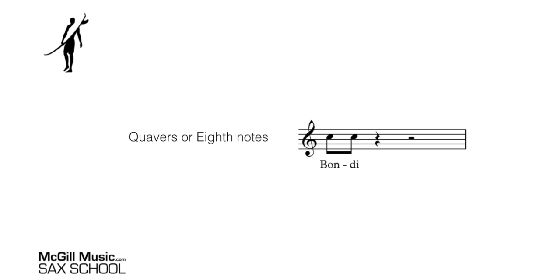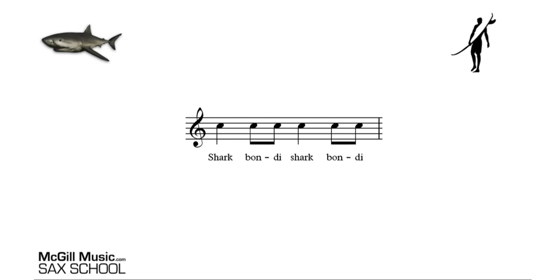If we look at two quavers or two eighth notes, we'll use the word 'bondi.' If you put them together in a piece of music, you'll see how this works. So in this piece of music, if we went through it in time with a beat, it would go: shark, bondi, shark, bondi. You can see from the rhythm of the words, we've got the rhythm of the music — and that's really what we're talking about here.